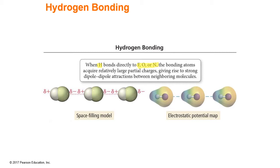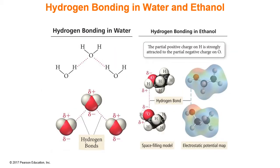This is an attraction for the partial negative part of a molecule towards the partial positive of another molecule. One of the most common substances that hydrogen bonds is water. These hydrogen bonds are what make water a liquid at room temperature. Water has an extremely small molar mass — only 18 grams per mole — for a substance that is a liquid at room temperature. Because of these strong hydrogen bond interactions, it makes the boiling point that much higher.